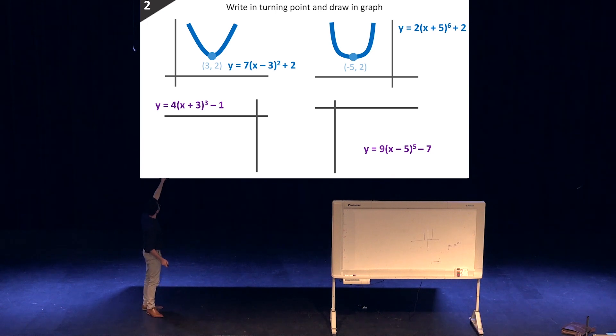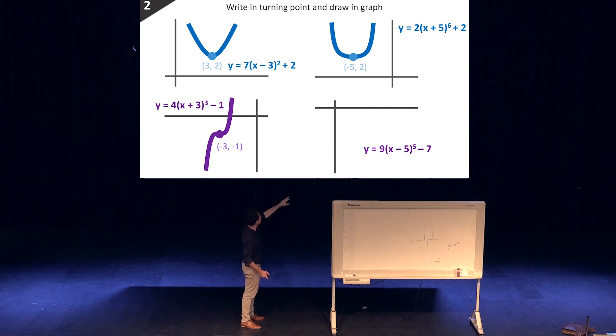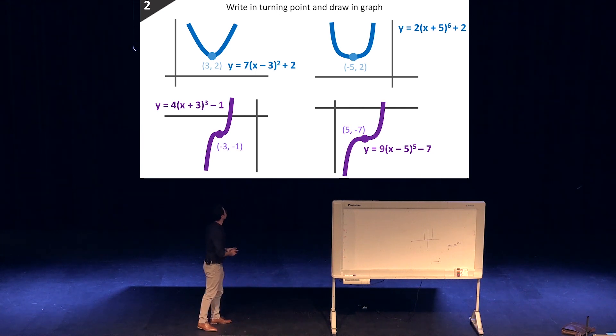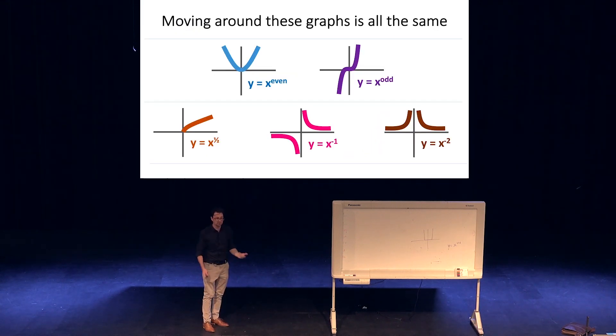Here we've got a cubic, where the turning point would be (-3, -1). And just chuck in the cubic shape. And here we've got a turning point of (5, -7). We put that in, and that's basically a cubic as well. So no matter what graph it is, moving around is all the same.